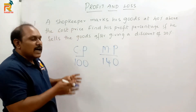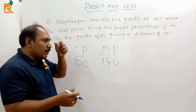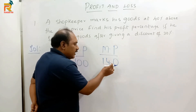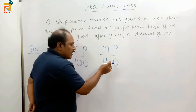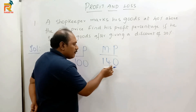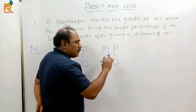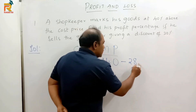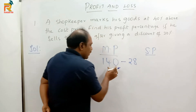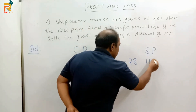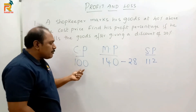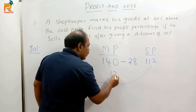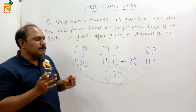He is selling these goods after offering a discount of 20%. Discount is always given on marked price. What is 10% of 140? Just divide by 10 — that is 14. So 20% is two times that, which is 28. Marked price minus discount gives the selling price: 140 minus 28 is 112. So the cost price is 100 and the selling price is 112.